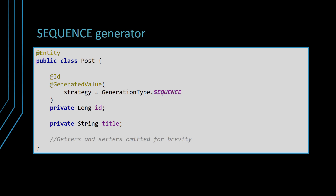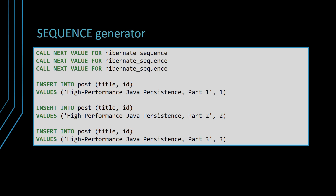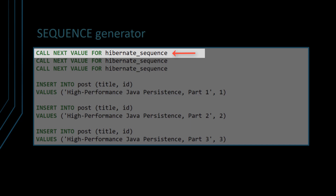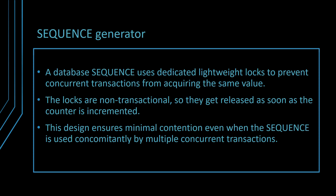The entity identifier mapping to a sequence database object is done via the sequence strategy of the generated value annotation. When persisting one entity, Hibernate is going to call the sequence to fetch the value used for populating the primary key. When the persistence context is flushed, the insert statement already contains the primary key value. Just like identity columns, database sequences use dedicated locks to prevent concurrent transactions from acquiring the same value. Since locks are released right after incrementing the associated counter, a gap can occur between the primary key values of two consecutive table rows. This is not a problem since primary key values need to be unique, not to form series of consecutive integer values. This design ensures minimal contention, even when the sequence is accessed by multiple concurrent transactions.